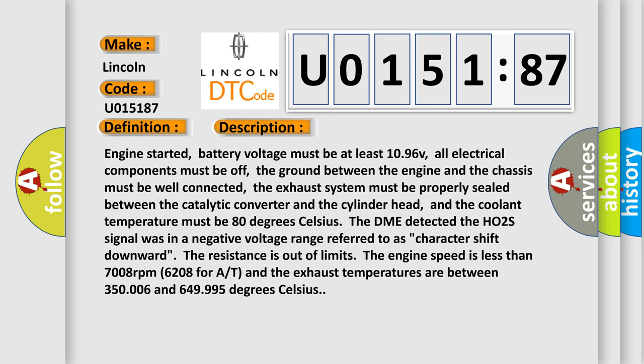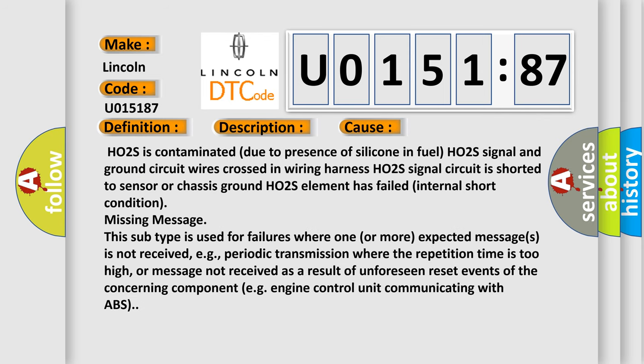This diagnostic error occurs most often in these cases: HO2S is contaminated due to presence of silicone in fuel; HO2S signal and ground circuit wires crossed in wiring harness; HO2S signal circuit is shorted to sensor or chassis ground; HO2S element has failed internal short condition. Missing message — this subtype is used for failures where one or more expected messages is not received, e.g., periodic transmission where the repetition time is too high, or message not received as a result of unforeseen reset events of the concerning component, e.g., engine control unit communicating with ABS.